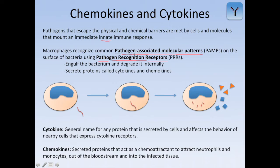PAMPs are essentially molecular signatures that only exist on bacteria, viruses, or anything that's foreign to the body, and they are recognized by pathogen recognition receptors. Pathogen recognition receptors recognize pathogen-associated molecular patterns — it's a way for our bodies to tell the difference between our cells and a foreign invasion.